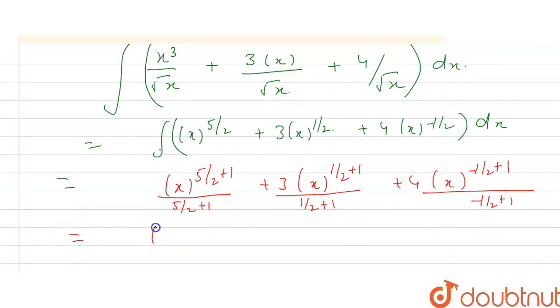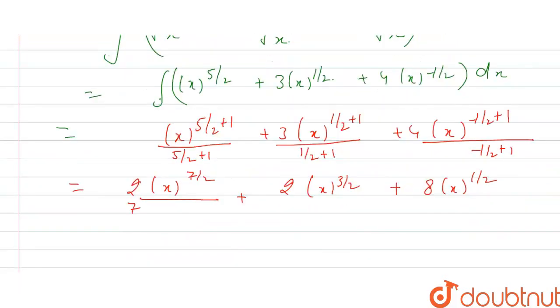Now simplified it, you will get x power 5 by 2 that is 7 by 2 divided by 7 by 2, so it becomes 2 by 7 plus 3 times of x power 1 by 2 - it becomes 2 plus 1 that is 3 by 2, and it becomes 2 and 3, 3 cancel each other. Plus, minus 1 by 2 plus 1 is 1 by 2. So it becomes - minus 1 by 2 plus 1 by 2 and 2 comes with 4 and multiply it, so it becomes 8 and x power 1 by 2. So our answer of the following question is 2 by 7 x power 7 by 2 plus 2 x times of power 3 by 2 plus 8 x power 1 by 2, that is our answer.